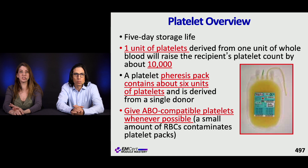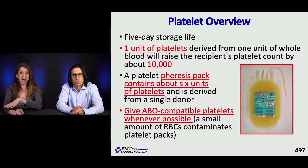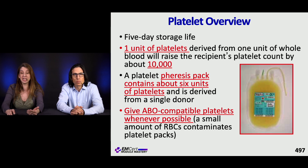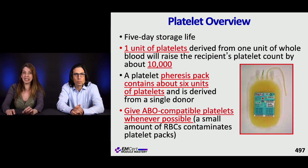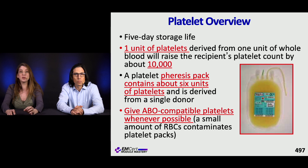Let's talk about bleeding disorders, starting with platelets. Platelets have a five-day storage life. One unit of platelets is derived from a whole unit of blood and typically raises the recipient's platelet count by about 10,000. A platelet pheresis pack contains about six units from a single donor — sometimes called a six-pack of platelets. You want to give ABO compatible platelets whenever possible because there can be a small amount of RBCs contaminating the pack.